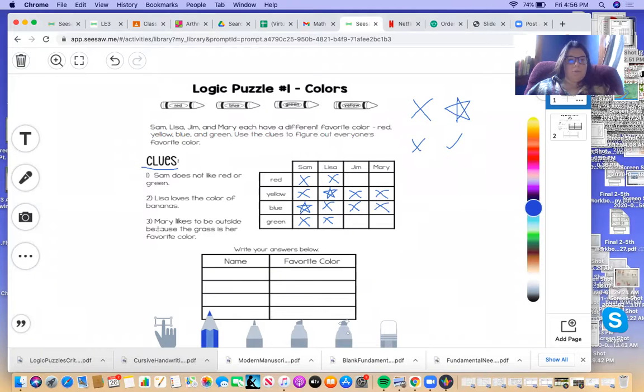All right. Number three, clue three. Mary likes to be outside because the grass is her favorite color. Well, grass is green. So Mary likes green. So we can put a star for Mary for green. Cross out green for Jim and red for Mary.